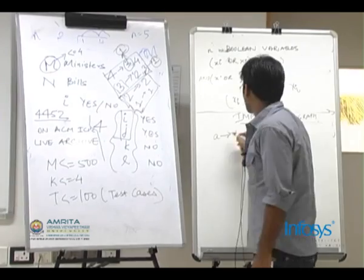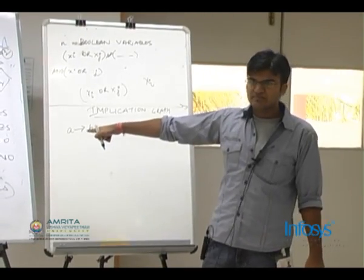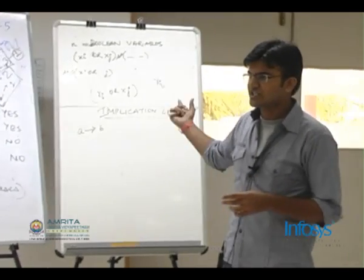We make an implication graph. Do you understand what this term is in Boolean algebra? A implies B. If A, then B.